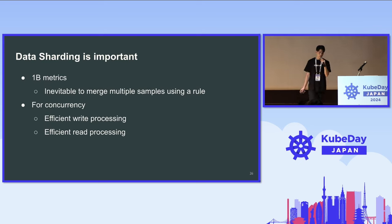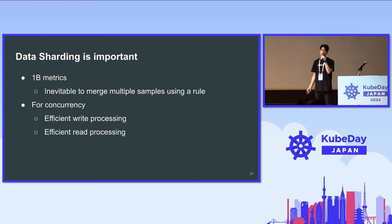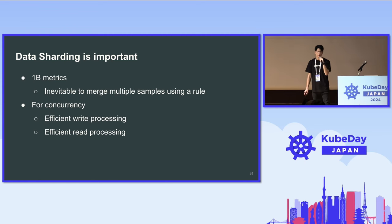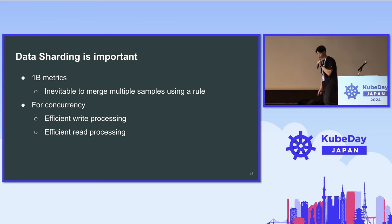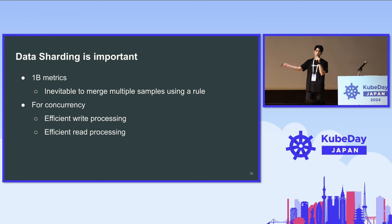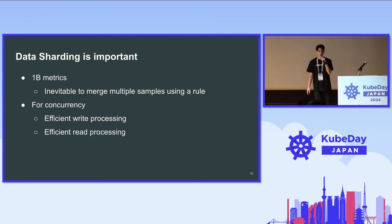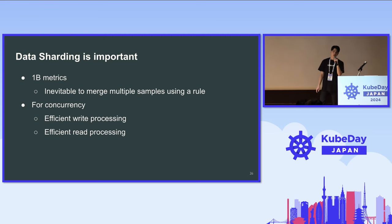Data sharding is really important because our private cloud S3-compatible object storage has an object count limitation of 10 million objects per bucket. If you don't merge multiple samples into a single file, you'd have 1 billion files, which is not feasible. So merging multiple samples into a single file is inevitable, and sharding is effective for concurrency control and concurrent data processing.